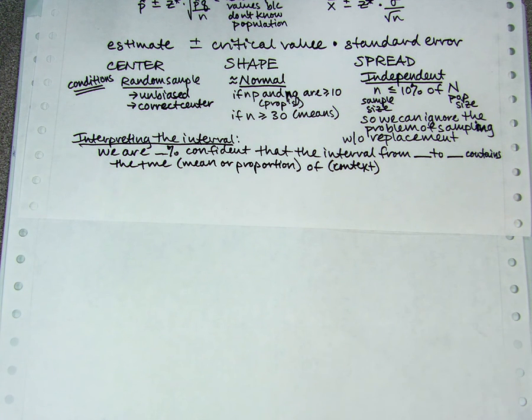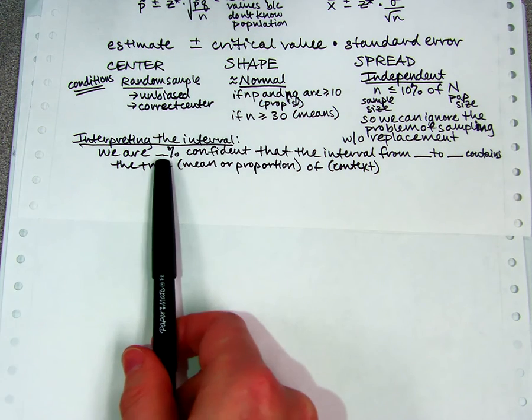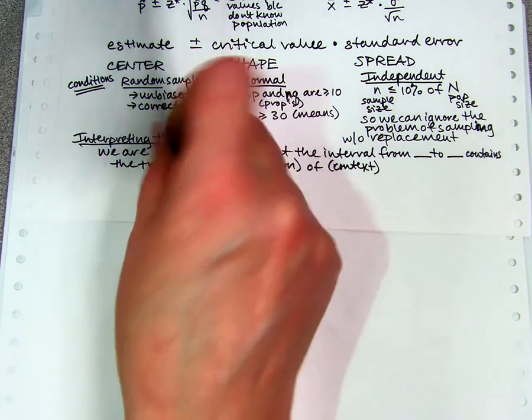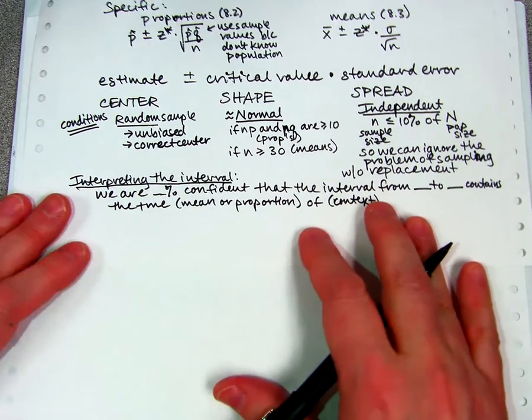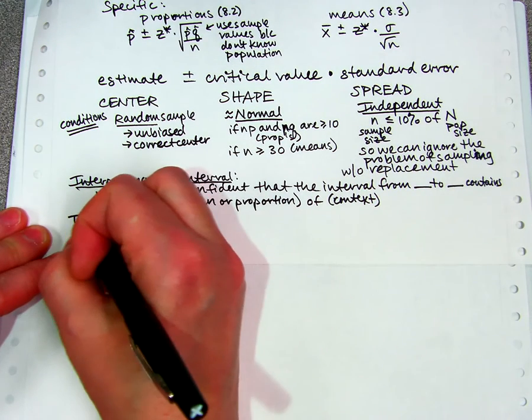That is one detail I should have mentioned. We are not going to call it a probability because it's not a matter of chance—the interval either captured it or not. This is how confident we are that we captured the true mean inside our interval. The other thing they might ask you to do is interpret the confidence level.